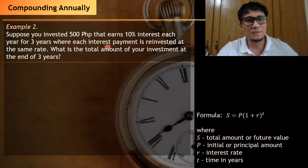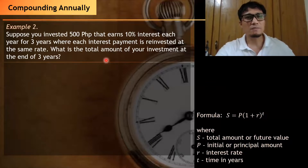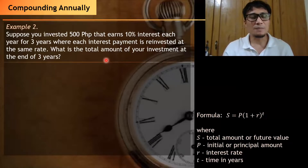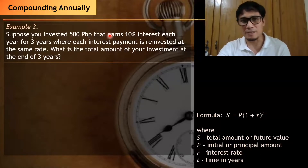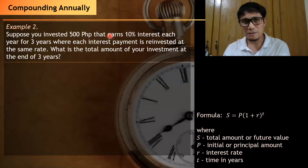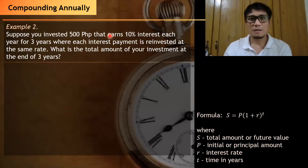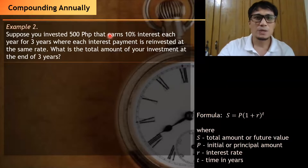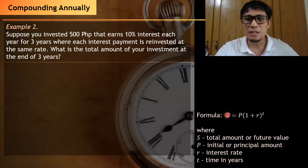We can solve this problem by computing the interest earned every year. In the second year, your initial amount would be 500 plus the interest earned in the first year. In the third year, the new principal amount will be the total amount — your initial amount plus the interest earned in the first year and in the second year, using the new principal amount as the initial value. But instead of doing that, we'll just use the formula.